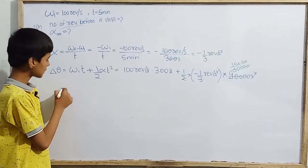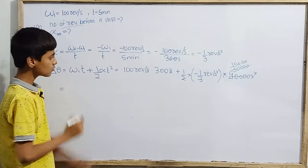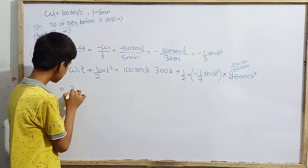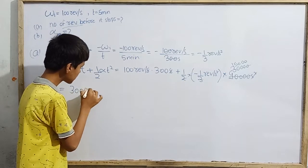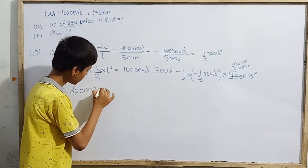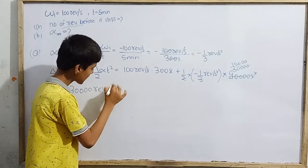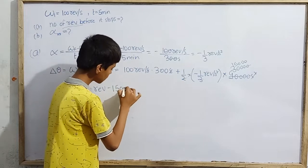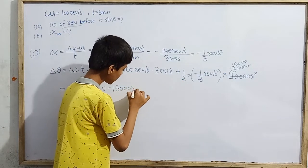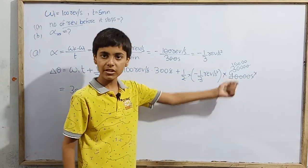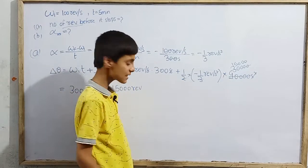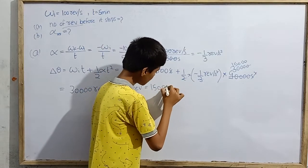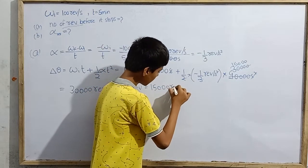The first term gives 300 × 100 = 30,000 revolutions. The second term gives ½ × (−1/3) × 90,000 = −15,000 revolutions. So Δθ = 30,000 − 15,000 = 15,000 revolutions. This is the angular displacement covered before stopping.